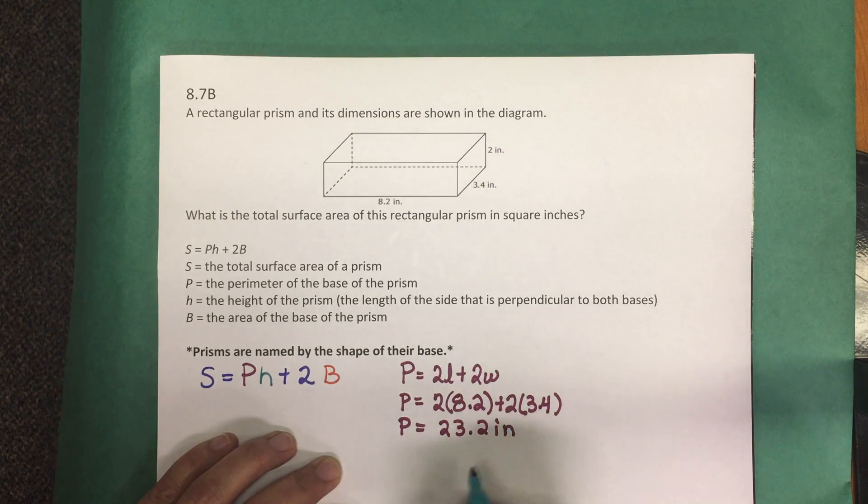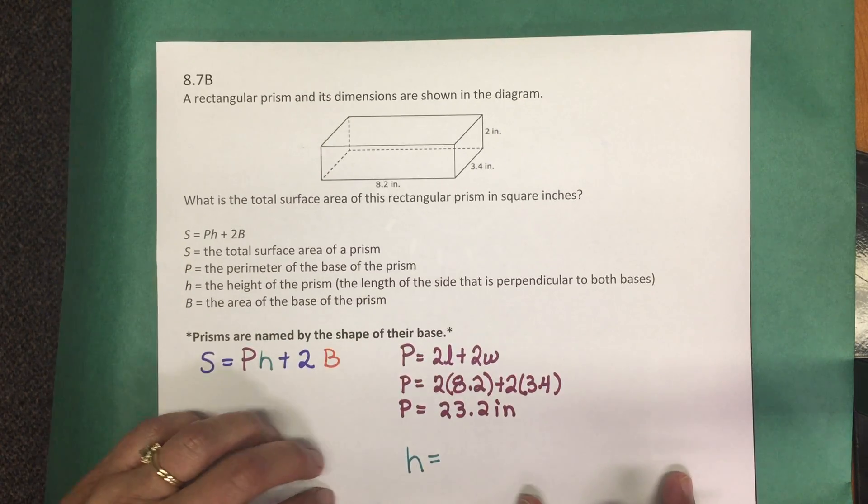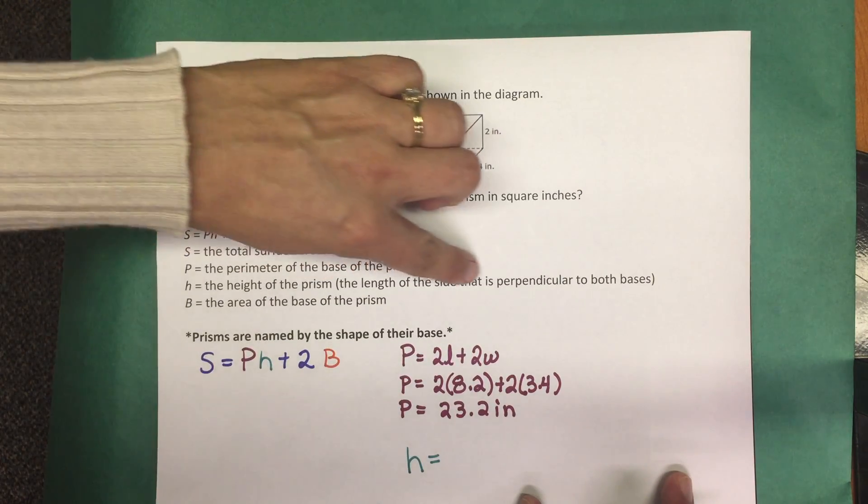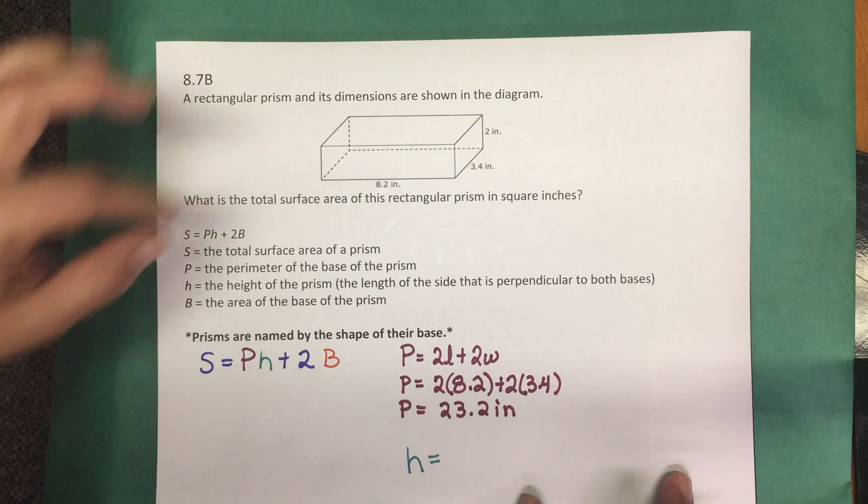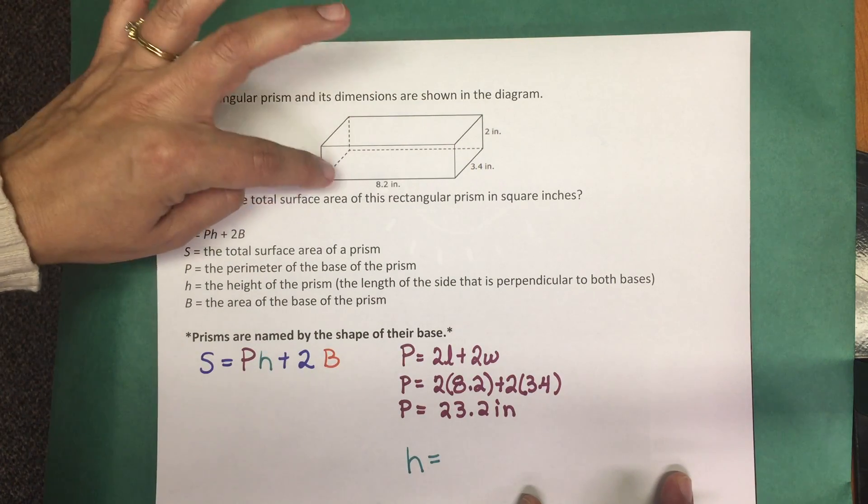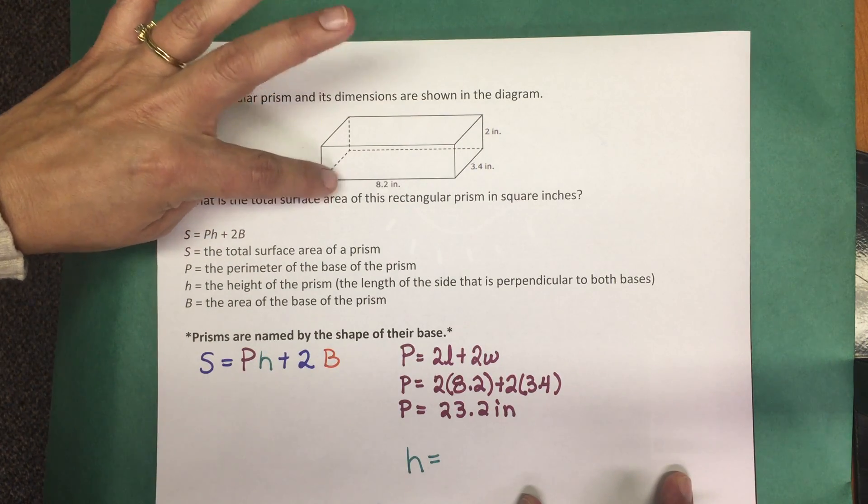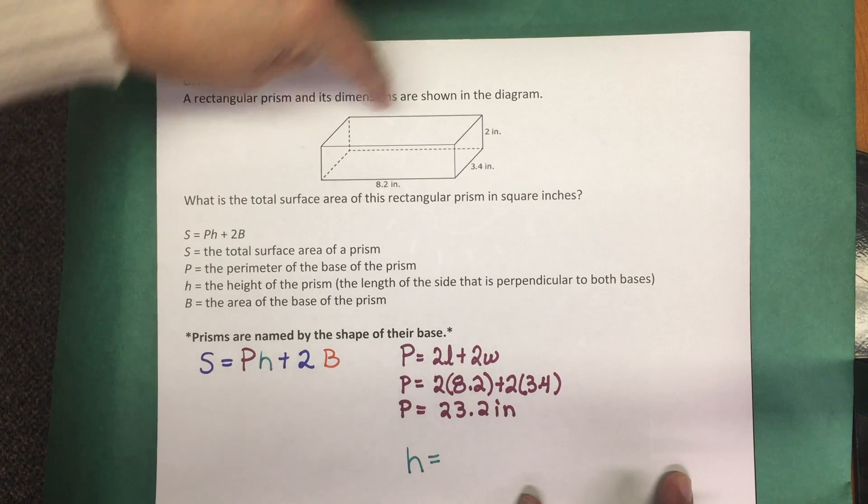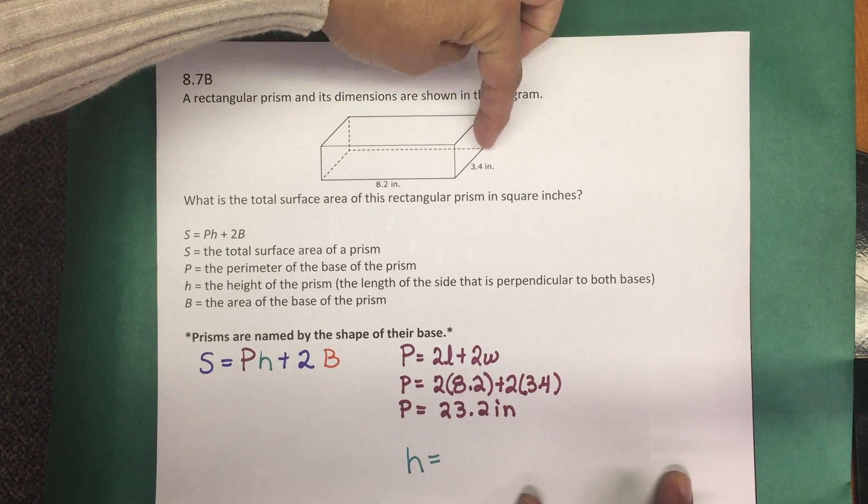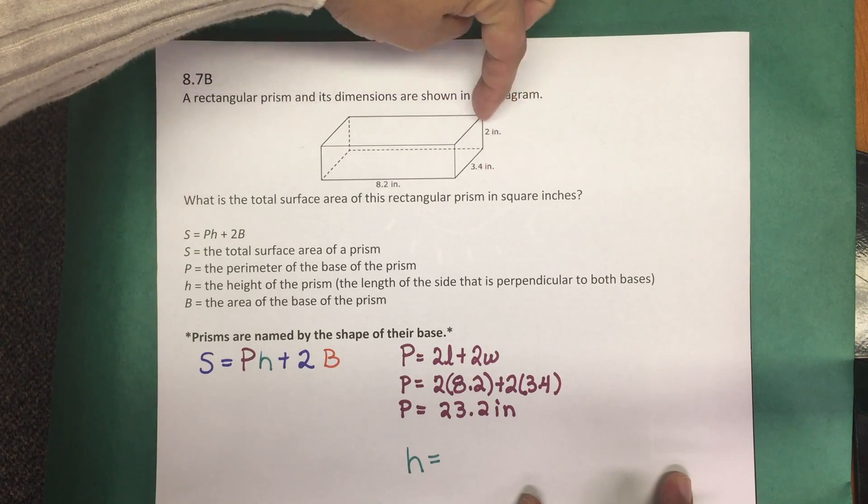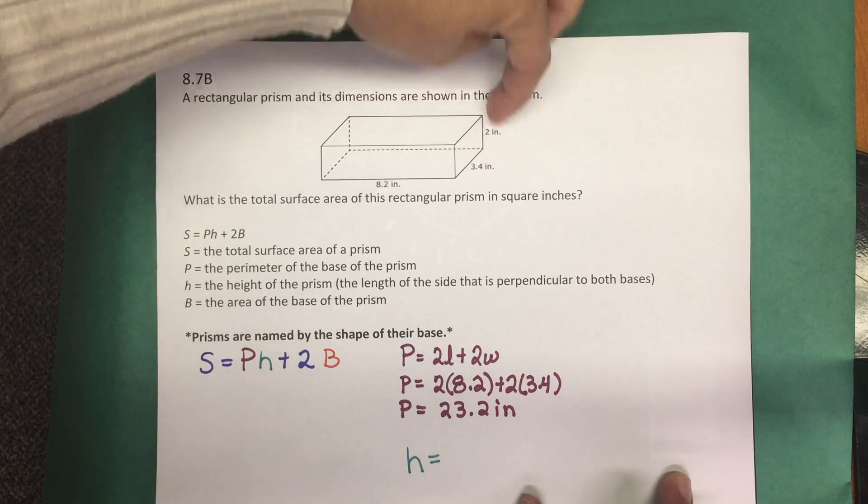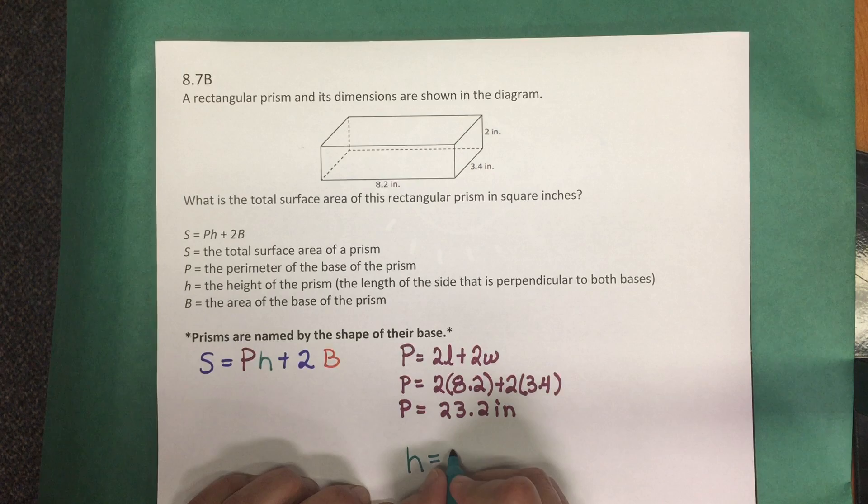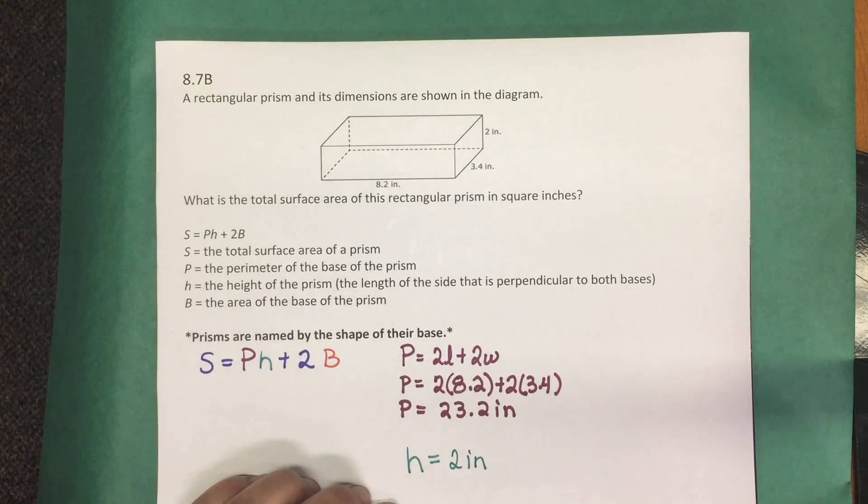The height of the prism—remember that the height is the length of the side that is perpendicular to both bases. Here are our bases: it's the one that the rectangular prism is sitting on and the one opposite it. The perpendicular side between those two bases has a length of 2. So the height is 2 inches.